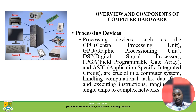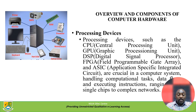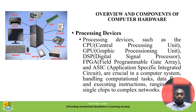Processing devices in a computer can take different forms aside from the Central Processing Unit. These include the Graphics Processing Unit (GPU), Digital Signal Processor (DSP), Field Programmable Gate Arrays (FPGAs), and Application-Specific Integrated Circuits (ASICs). These are crucial in computer systems, handling computational tasks, data flow, and executing instructions ranging from single chips to complex networks of circuits.